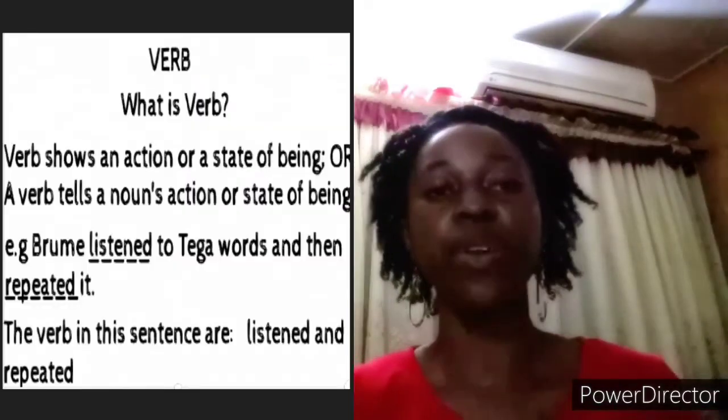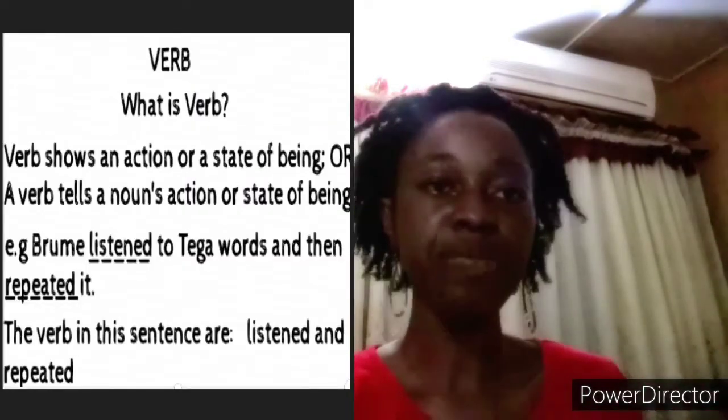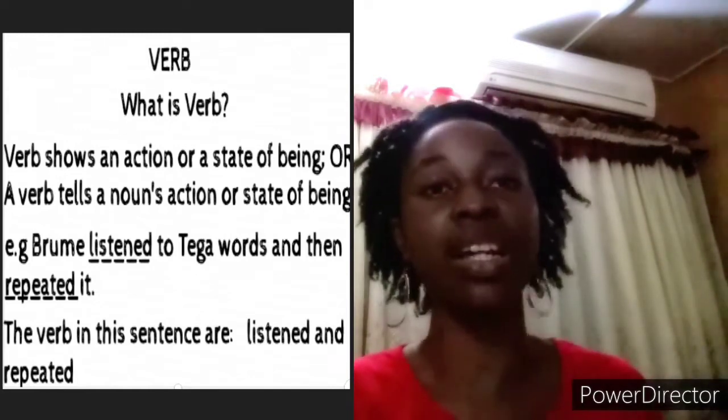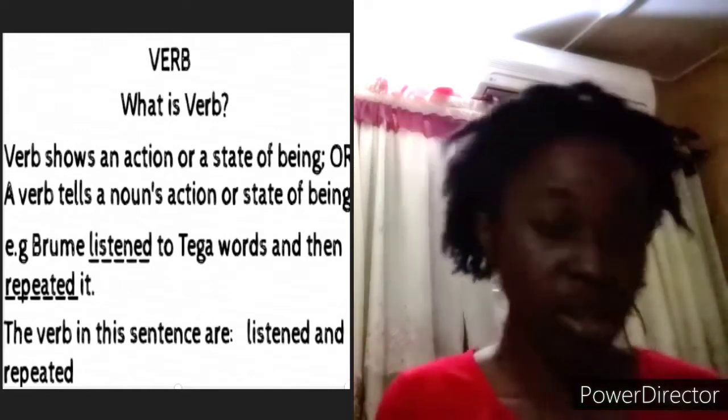We'll talk about each one a little with some examples and move on to the next one so we can complete all of them in this video. We are done with pronoun, so let's go to verb. What is a verb? A verb is an action word — that's basically what a verb is. It shows an action or a state of being. You can say it tells the noun's action or the state of being of the noun.